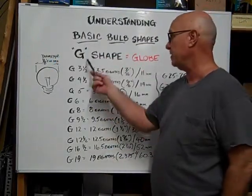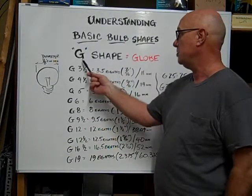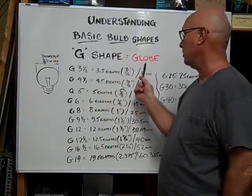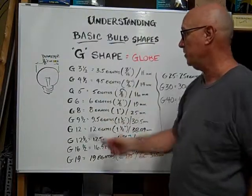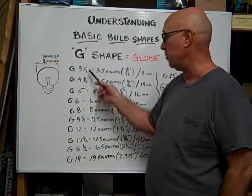This bulb shape we're talking about is a globe shape envelope. G stands for globe. When you see this number G and you have a globe shape bulb, round shape bulb,